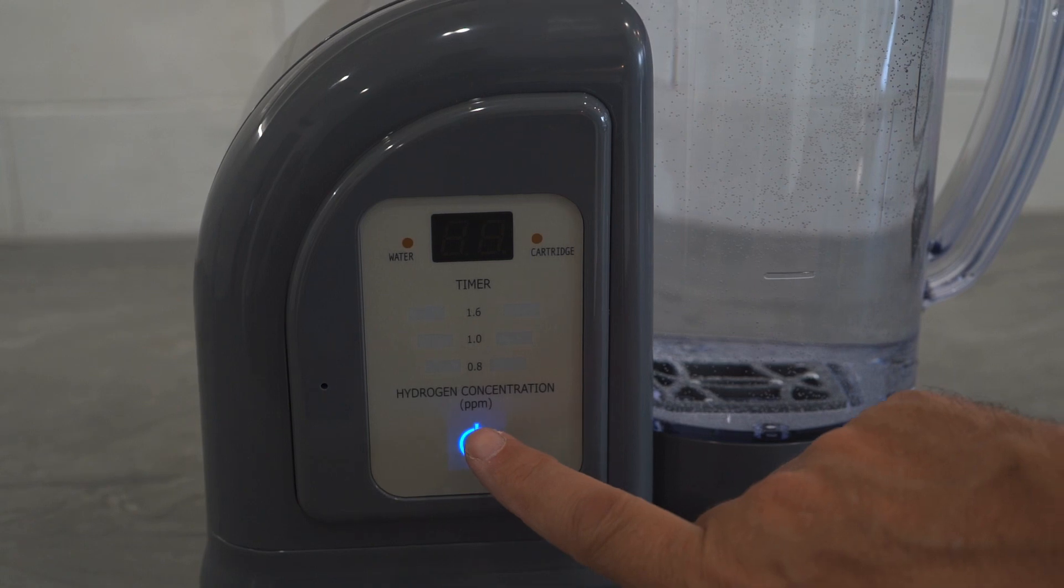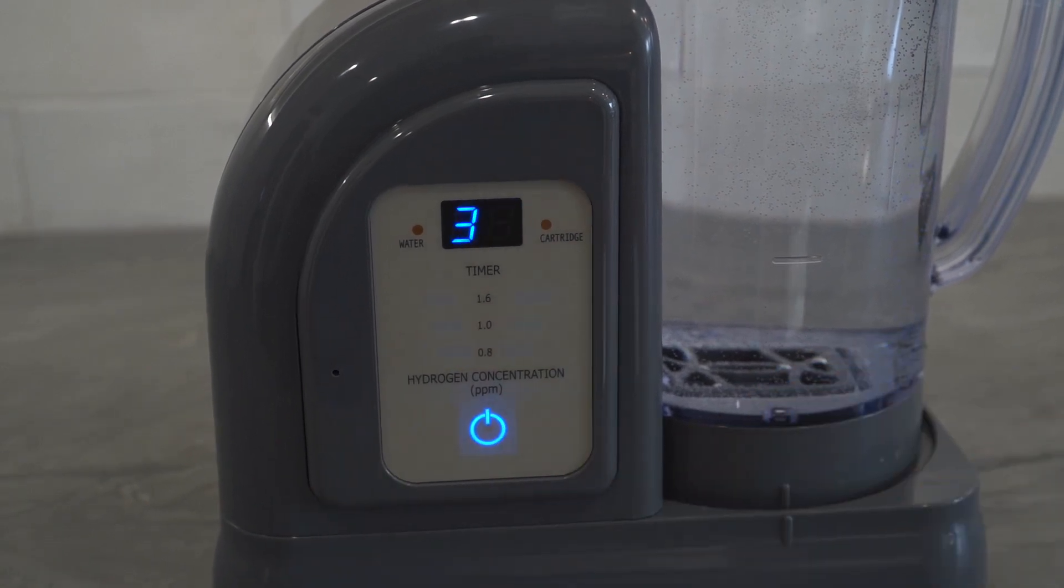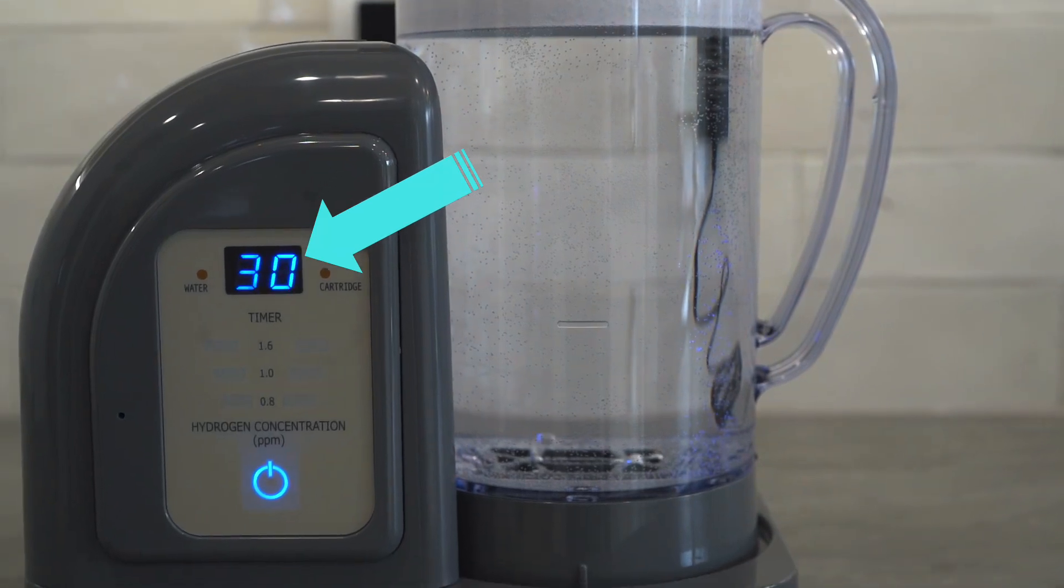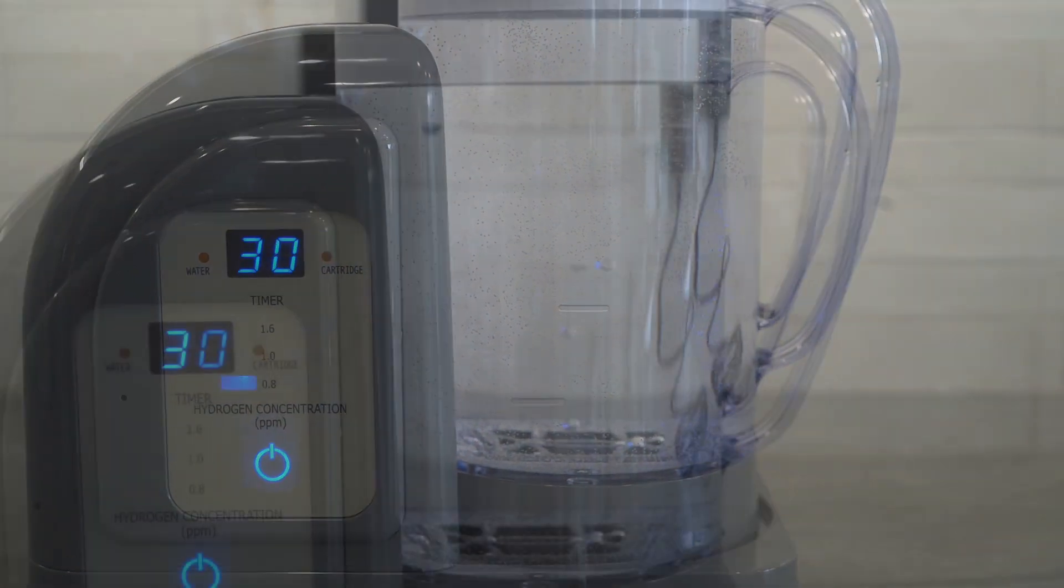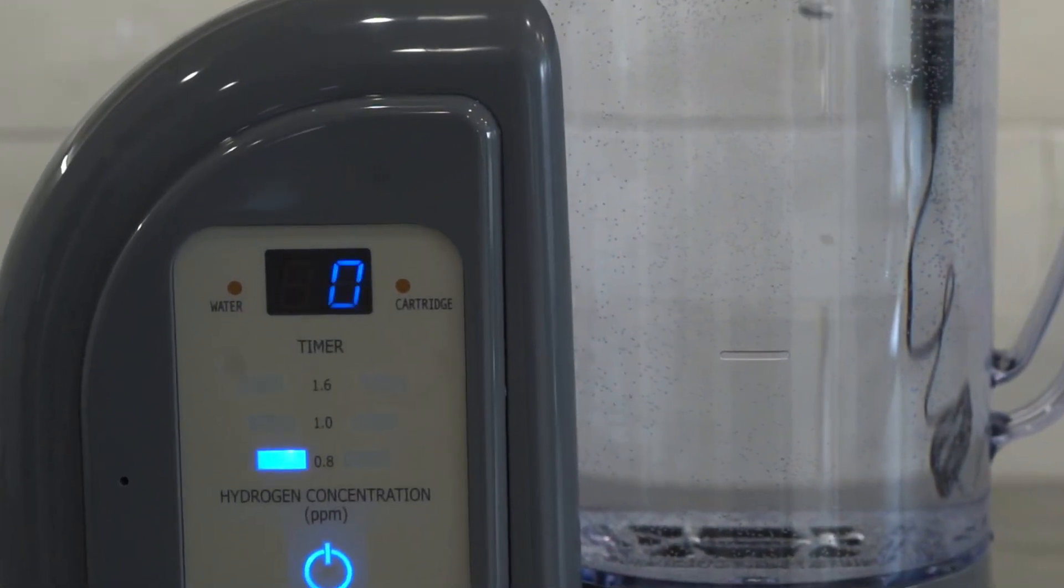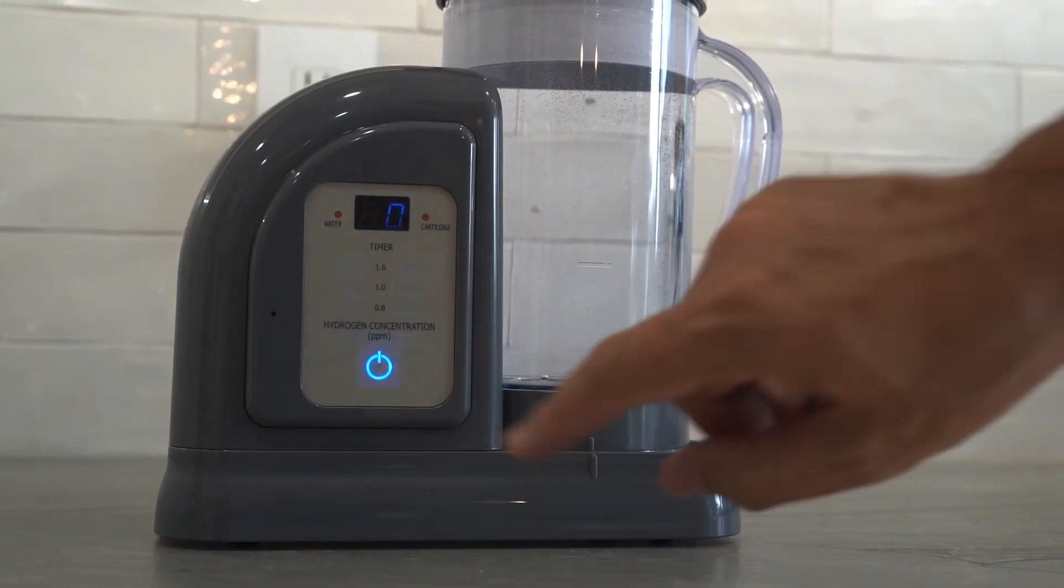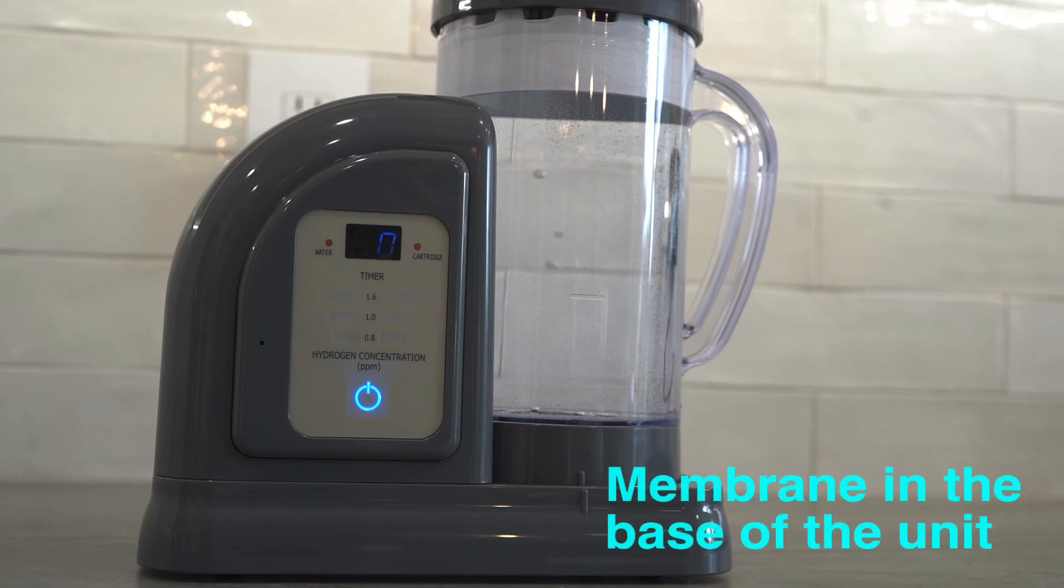Press the power button once. You will hear a beep and the countdown timer will show 30, indicating that the 30-minute mode has started. For the first few uses, press the power button again to run a 90-minute mode. This will speed up the preparation process of the membrane.